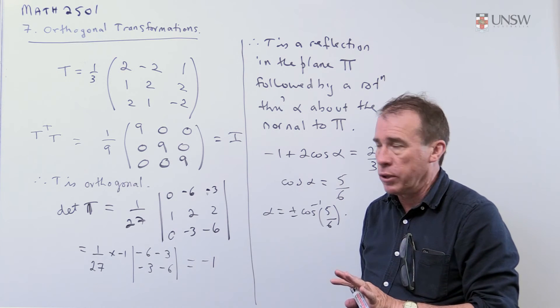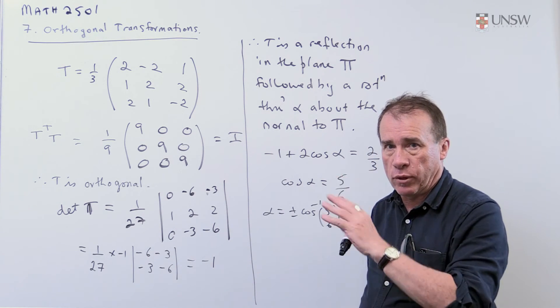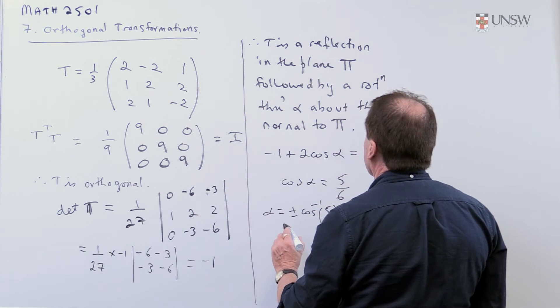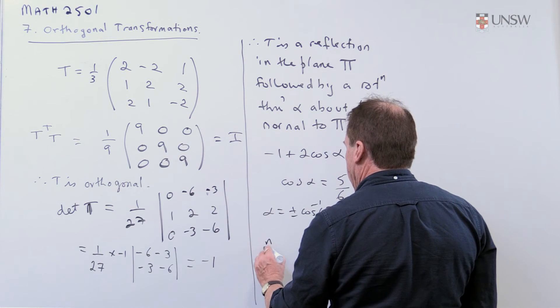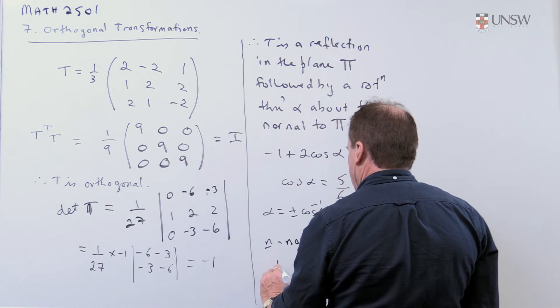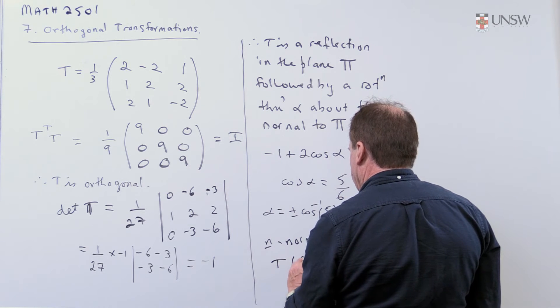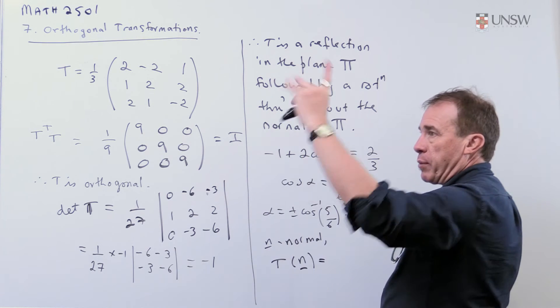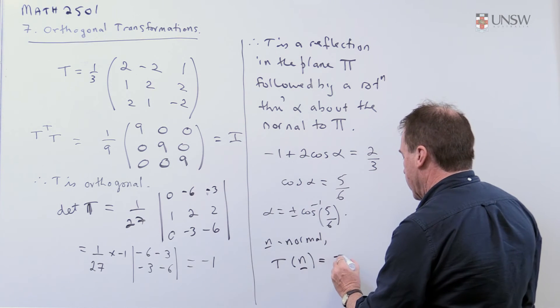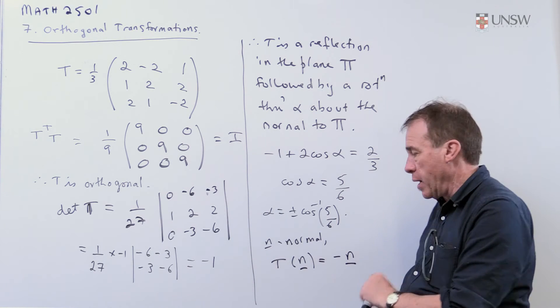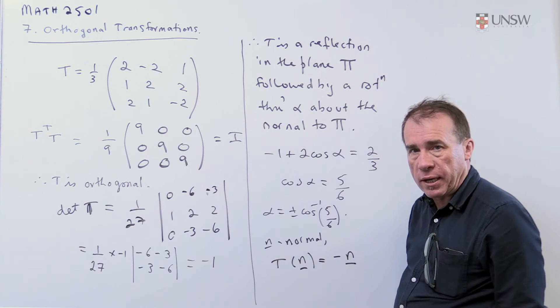So if I work out what the normal is, then I can work out everything else. So just think about what the normal does. So if n is the normal, then when you map the normal vector under this, it's going to get flipped about the plane, so it's going to go to minus itself. And then if it gets rotated about n, it doesn't move. So t of n is going to be minus n.